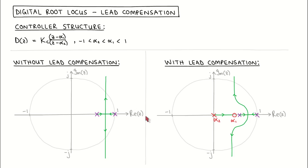If we now add lead compensation to this controller, with the controller zero placed to the right of the controller pole, then the root locus will be bent to the left. It would now be possible to choose closed loop poles with acceptable damping that would also give a faster closed loop response. Lead compensation is usually used in a similar context where we want to improve the speed or damping, or both, of the closed loop response.